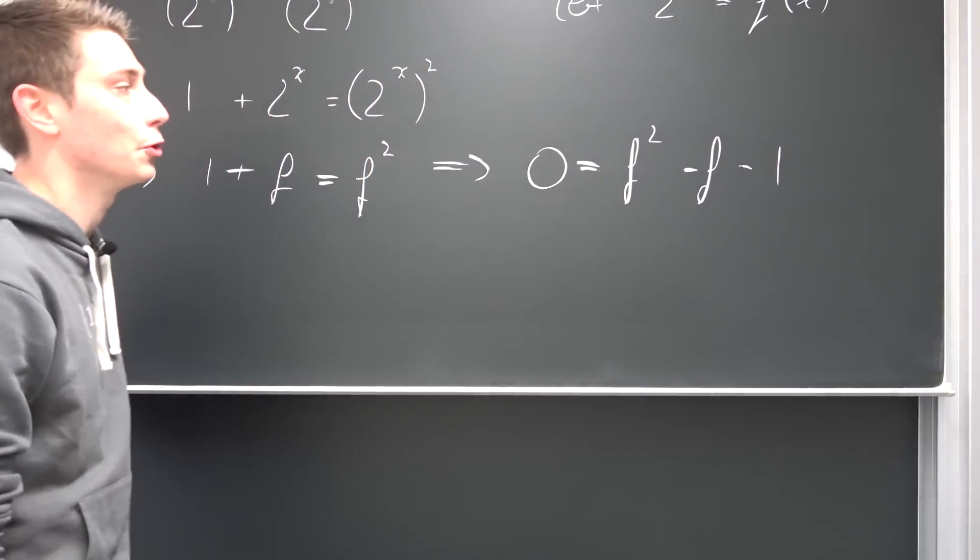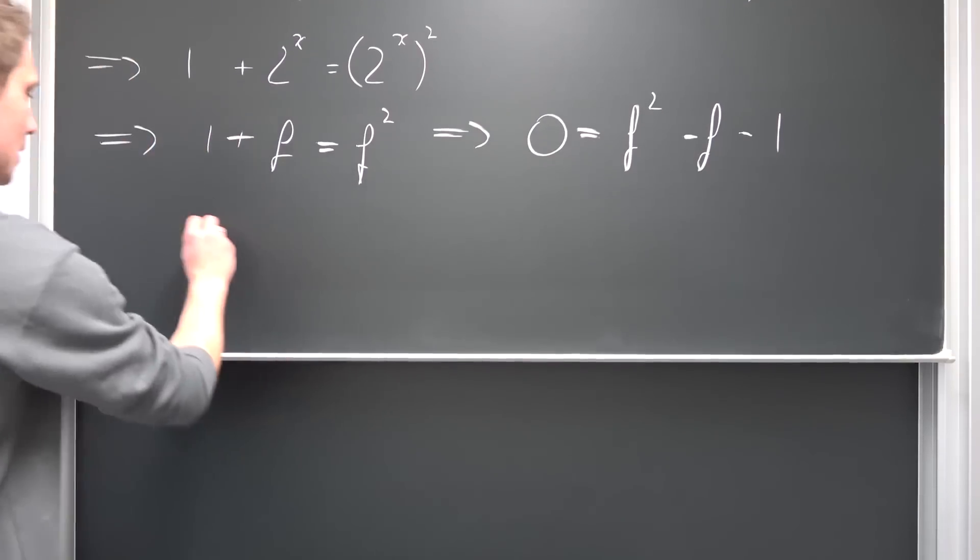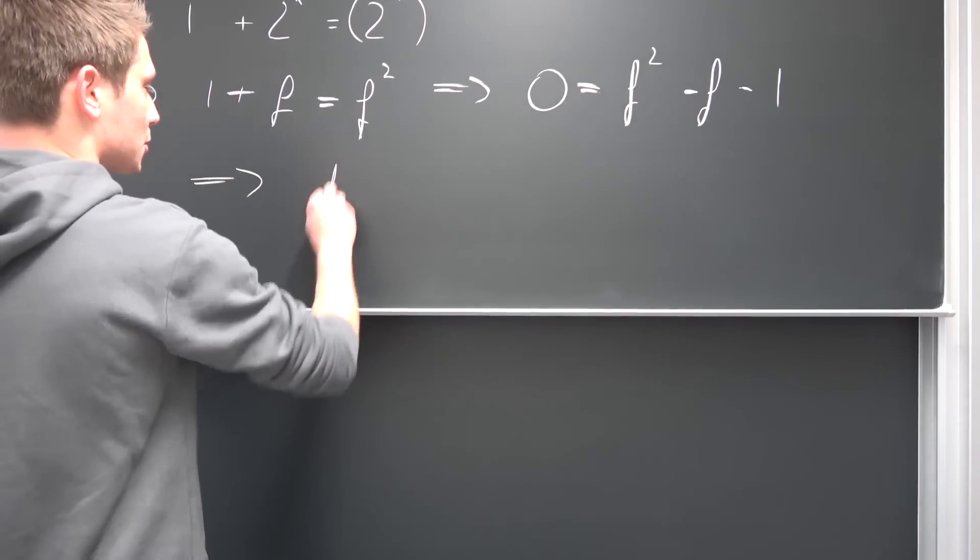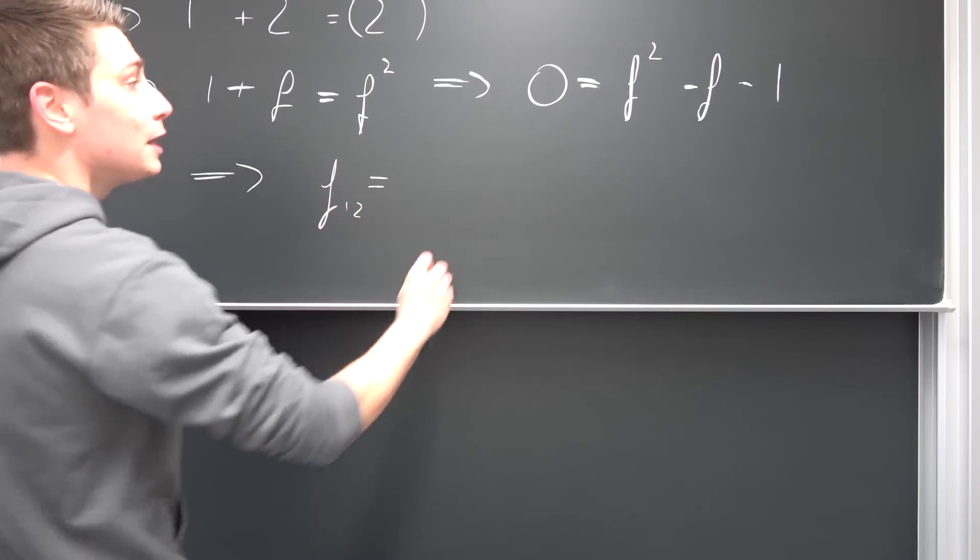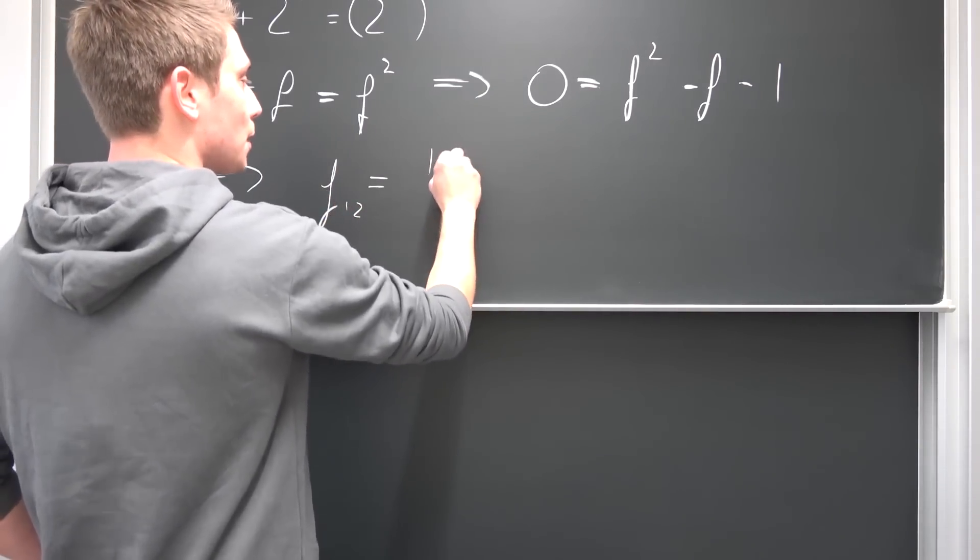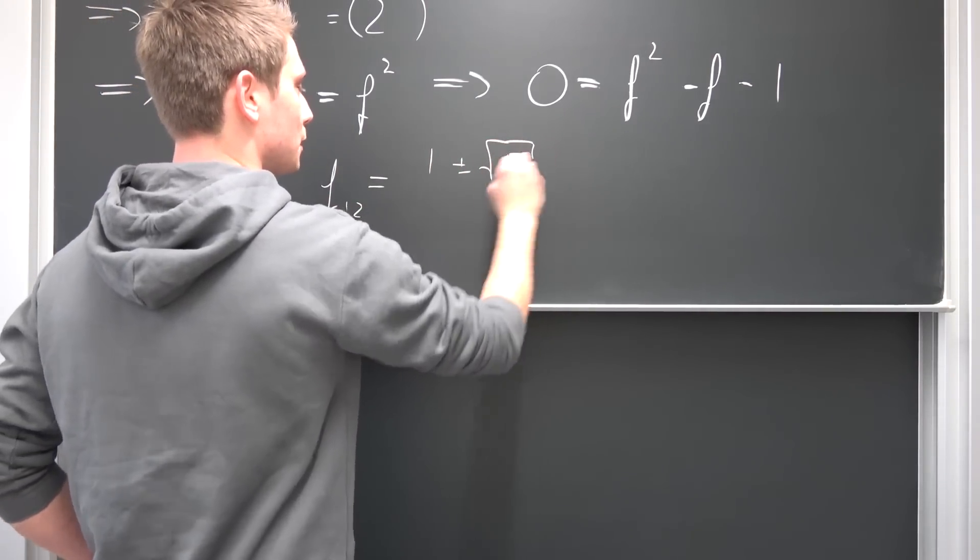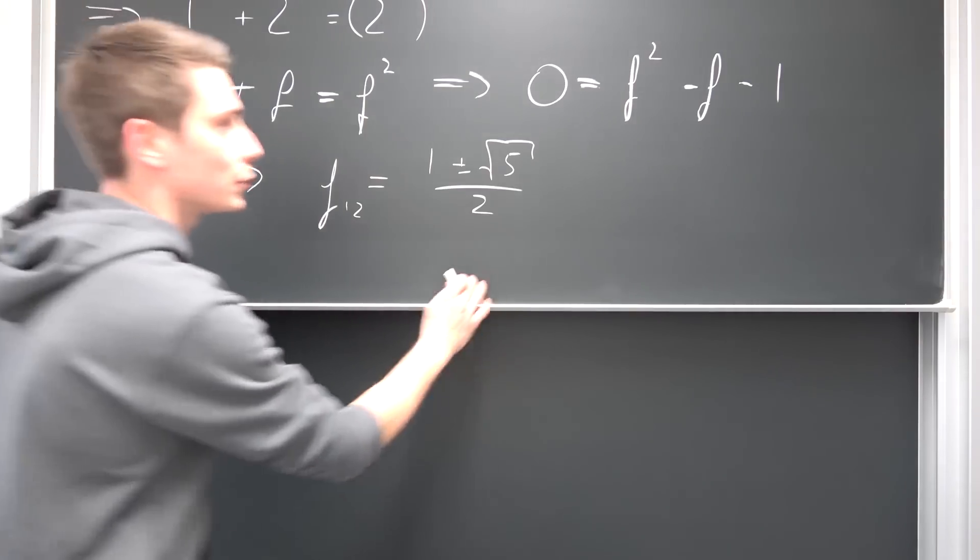And now we can solve this one right here. We have actually solved it before. It's just our generating polynomial for the Fibonacci numbers, meaning overall our zeros of this function are going to be f1 and 2 at the moment being equal to 1 plus minus the square root of 5 over 2 by using the quadratic formula.